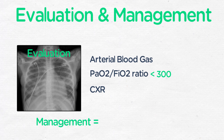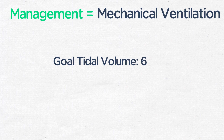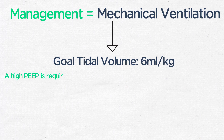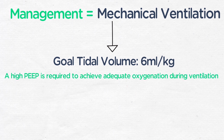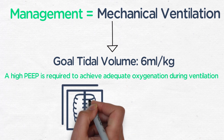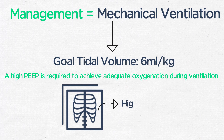The mainstay of therapy for ARDS is mechanical ventilation, with a goal tidal volume of 6 mL per kg, which is required to adequately ventilate the lungs while minimizing ventilator-induced lung injury. A high positive end expiratory pressure, or PEEP, is often required to achieve adequate oxygenation during mechanical ventilation. It is really important to also treat the underlying cause. However, despite these maneuvers, ARDS is associated with a high mortality rate.